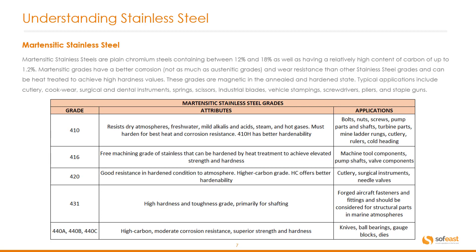Typical applications for martensitic stainless steel include cutlery, cookware, surgical and dental equipment, springs, scissors, industrial blades, vehicle stampings, screwdrivers, pliers, and staple guns. A table below shows the grades on the left-hand side along with their attributes and typical applications for each of those grades.